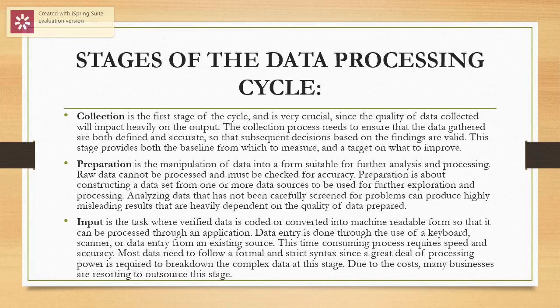What are the stages of the data processing life cycle? We shall look at six stages. The first is collection, which is the first stage and is very critical, since the quality of data collected will impact heavily on the output. The collection process needs to ensure that the data gathered are both defined and accurate, so that subsequent decisions based on the findings are valid. This stage provides both the baseline information and a target on what to improve.